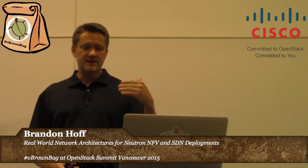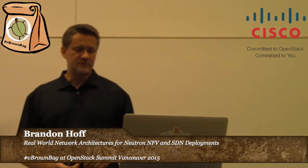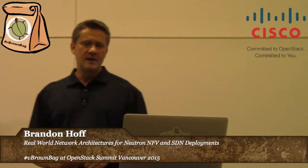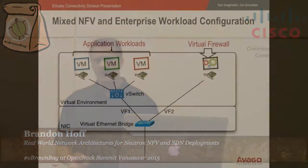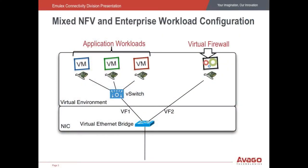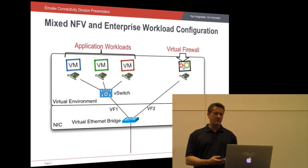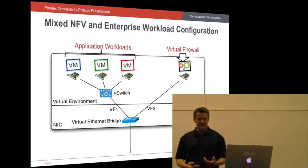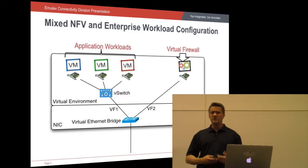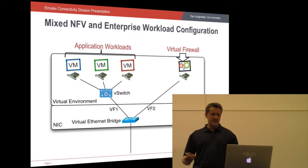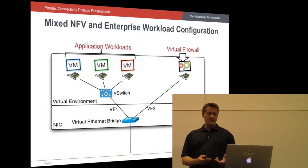How do I get configuration into the NIC? How do I set up what's called the virtual Ethernet bridge, which is part of the SR-IOV standard? I'll give you a network diagram from a mixed NFV and enterprise workload configuration. On the left-hand side of this slide, you'll see application workloads — more of your standard workloads. They run through a vSwitch, either a VMware vSwitch, OVS, or something else. This could be a MySQL database or something like that. These tend to work really well with vSwitches because it's easier to do VM migration with a vSwitch.